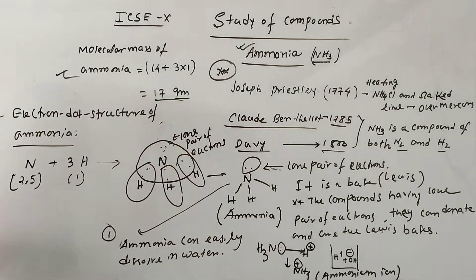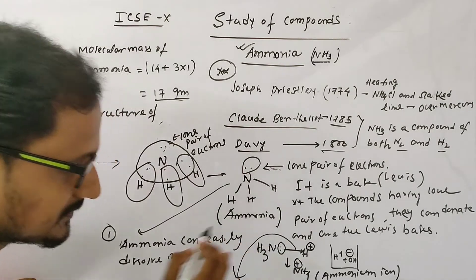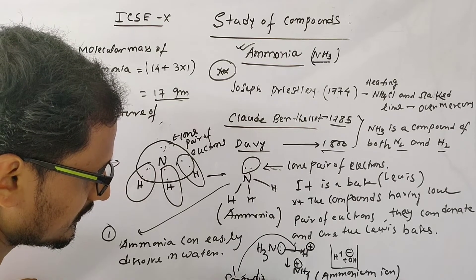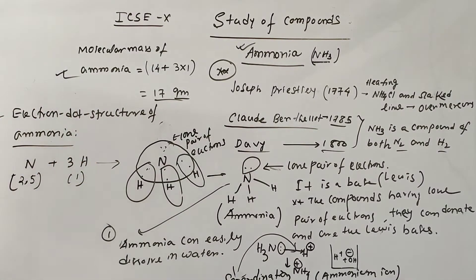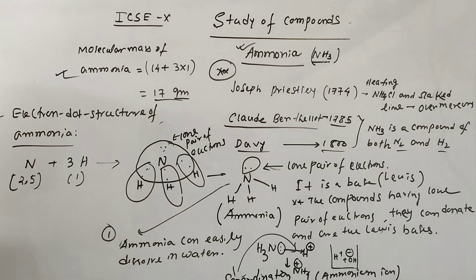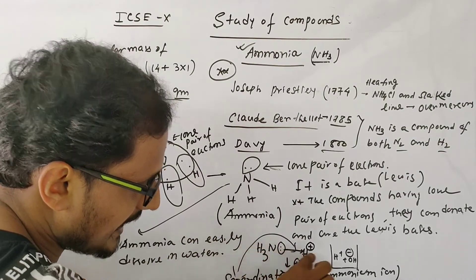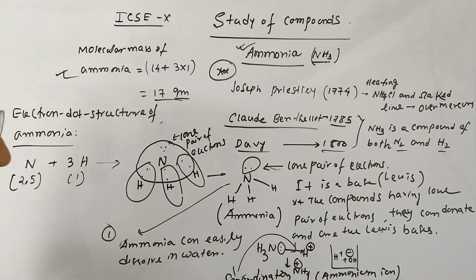The bond formed between the lone pair of electrons and H+ is a new type of bond called a coordinate bond, represented by an arrow from the lone pair to H+. This is discussed further in the acid-base and complex salt chapter. So NH4+ is formed, and in solution we have NH4+ and OH−.